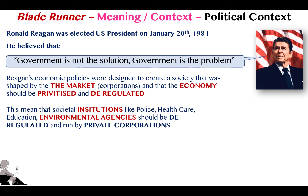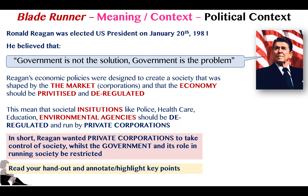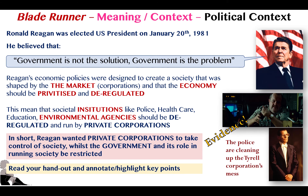Reagan was elected president on 20th January 1981. He believed government is not a solution — it's a problem. When he came in, he deregulated lots of democratic governmental institutions, removing government control and allowing corporate or private entities to come in and operate as if they were the government. One of the most basic ways we can point this out in Blade Runner is that the police in the film seem to be working for a private corporation, not the government. There's no mention of a democratic government in a traditional sense — it seems like the Tyrell Corporation governs society.